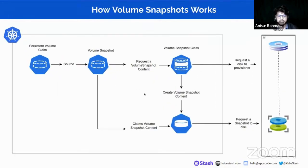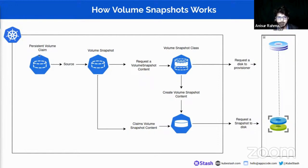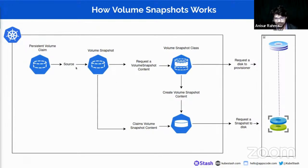Here is a diagram that shows how volume snapshots work in Kubernetes. When we create a persistent volume claim, we can specify a volume snapshot namespace and name. Under the YAML configuration, this diagram shows how a PVC provisions a PV from the volume snapshot. First, the volume snapshot requests a volume snapshot content into the volume snapshot class, similar to how a PVC requests a volume into the storage class.